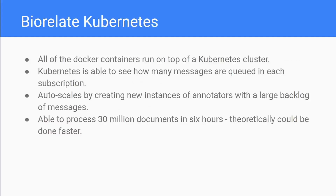We put all of these Docker containers on top of a Kubernetes cluster. One of the benefits of Kubernetes is you can automate auto-scaling quite easily. Kubernetes can see how many messages are in each PubSub topic and scale in reaction to a particular part of the pipeline that has a big backlog. For example, if the topic behind ChemSpot has a lot of unprocessed messages, Kubernetes can spin up extra instances of ChemSpot to get more messages through. This allows us to process about 30 million documents in six hours.